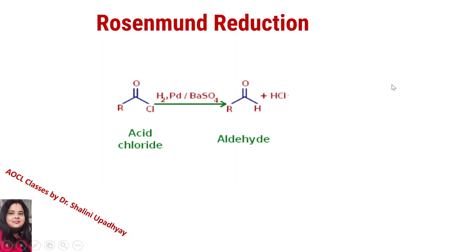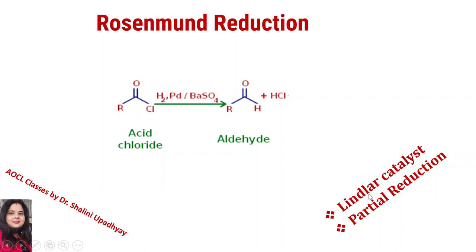This is the main reaction of the Rosenmund reduction, in which acyl chloride is converted into the aldehyde in the presence of H2/Pd and BaSO4, with the removal of HCl. We also study here the Lindlar catalyst. This is the Lindlar catalyst and the partial reduction — this reduction is the partial reduction.